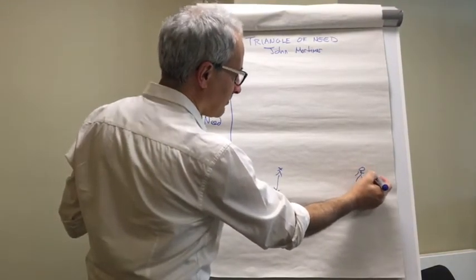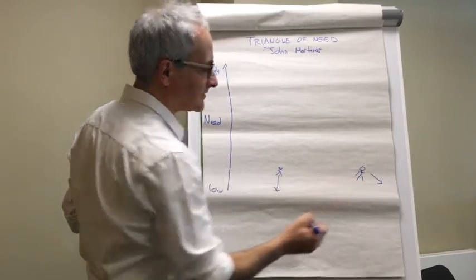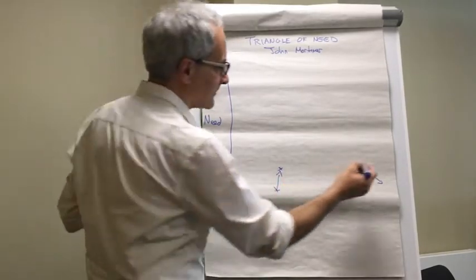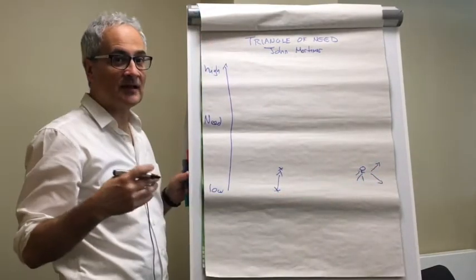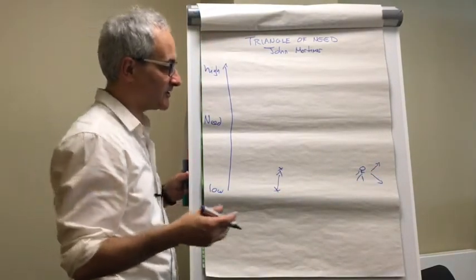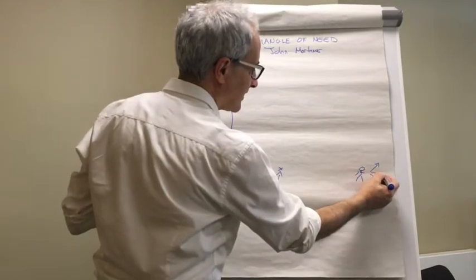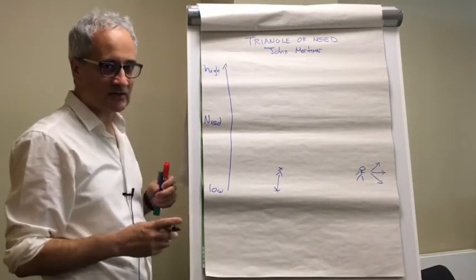They can either help them and their level of need goes down. They can choose to do something and their level of need continues to rise. Or they can do something and their level of need stays the same.